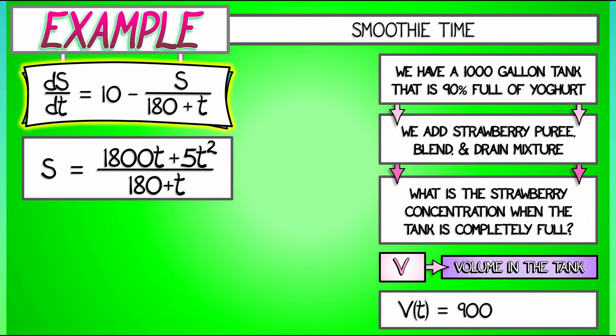Remember what that is? We started off at 900 gallons of yogurt, we add in strawberry puree at a rate of 10 gallons per minute, and drain out the stirred mixture at the rate of 5 gallons per minute. That means our volume V is 900 plus 5t.